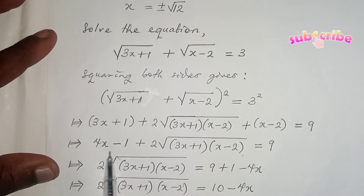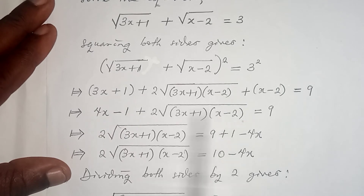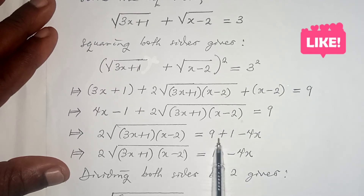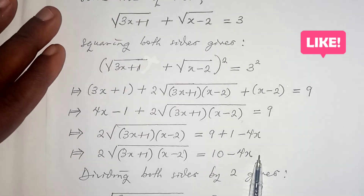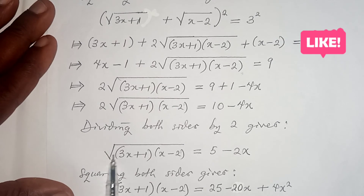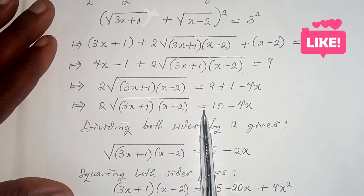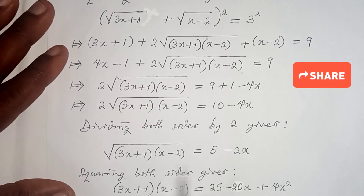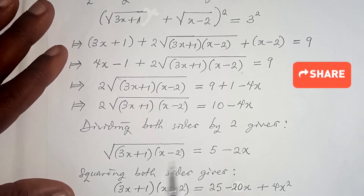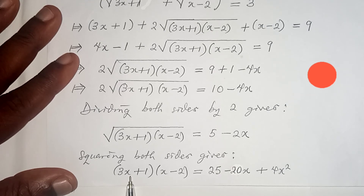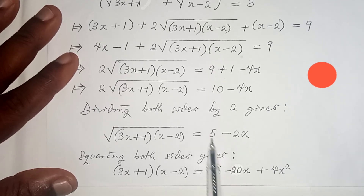Adding like terms: 3x plus x gives 4x, and 1 minus 2 gives minus 1, so the equation reduces accordingly. Subtracting 4x minus 1 from both sides leaves the radical term on the left and 9 plus 1 minus 4x, which is 10 minus 4x, on the right. Dividing both sides by 2 gives root((3x plus 1)(x minus 2)) equals 5 minus 2x. Now squaring both sides again will isolate this remaining radical.